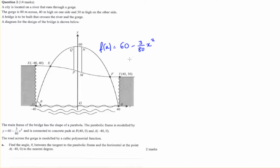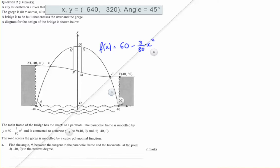The first thing we need to find is angle theta, which is between the tangent to the parabolic frame and the horizontal at this point, to the nearest degree. Let's sketch that tangent line.